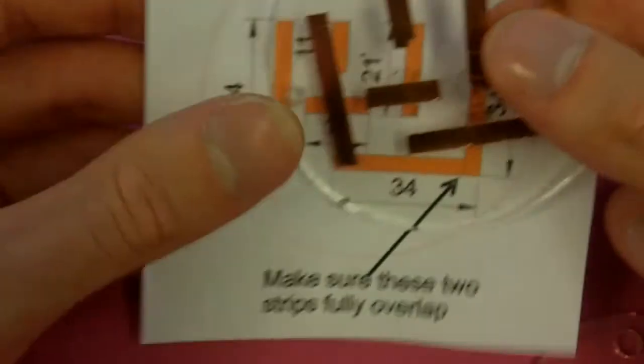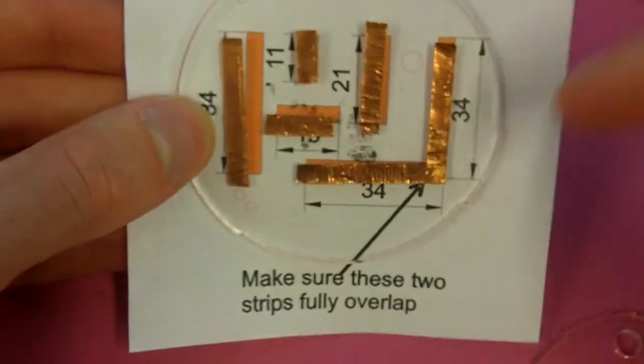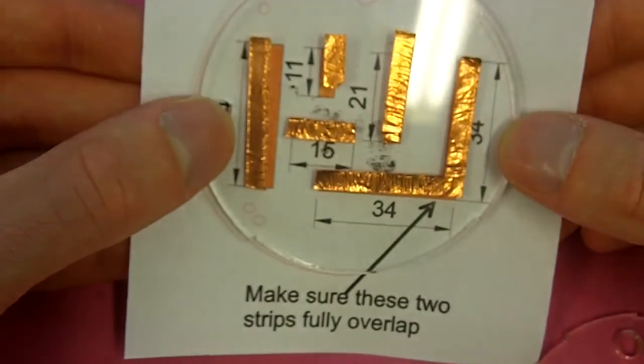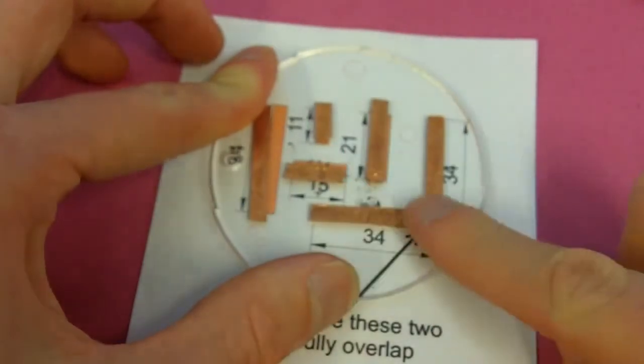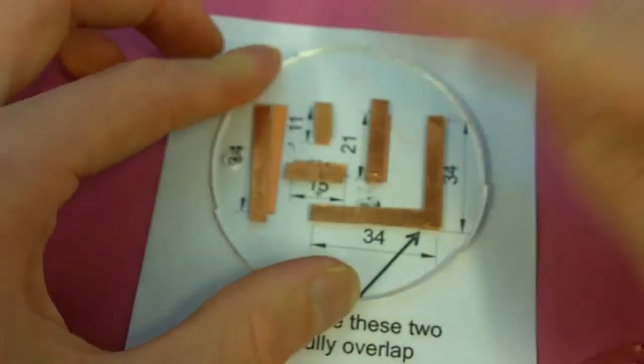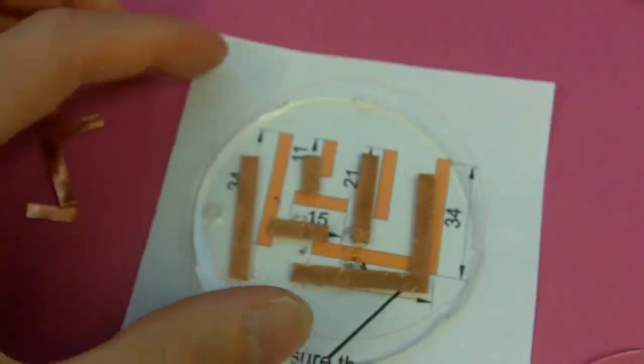Now the finished one should look something like this. You can see all the copper tape is in the right sort of place. It doesn't have to be exact. What you need to make sure is just that all of them are pushed down nice and firmly. That's all you have to do for the first one, simple as that.